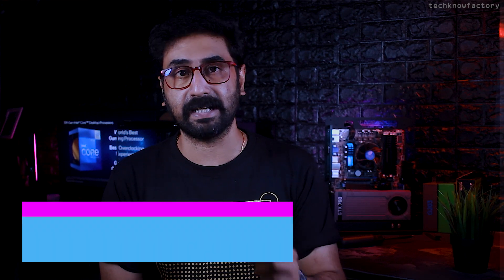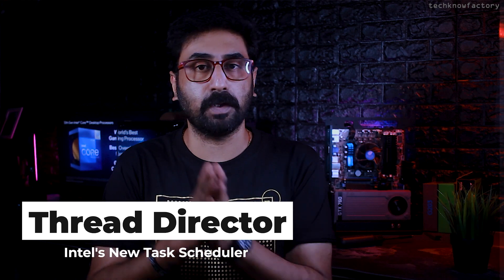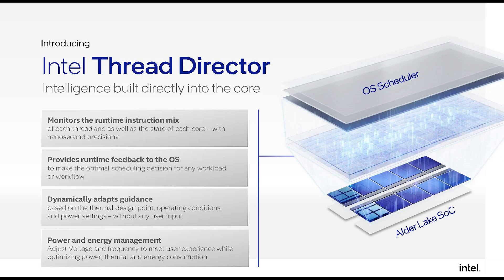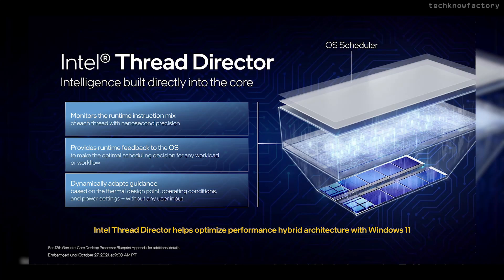Obviously there is a question of how the OS recognizes which tasks go to P-cores versus E-cores. Intel's solution is called Thread Director. Thread Director acts as a middleman — when you start a task, it analyzes the complexity and requirement, then schedules it either to the Performance cores for complex work or to the Efficiency cores for lighter tasks.